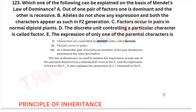Which of the following can be explained on the basis of Mendel's law of dominance? The outcomes of the law of dominance are: there is a distinct unit called factor; factors occur in pairs; in a dissimilar pair of factors, one will be dominant and one will be recessive. These are from your principles of inheritance and the law of dominance.